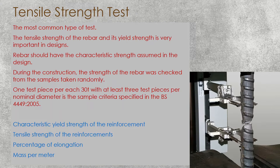During construction, the strength of the rebar is checked from samples taken randomly — one test piece per 300–330 tonnes, with at least three test pieces per nominal diameter. Each sample criteria is specified in BS 4449:2005, though tonnage may vary based on the relevant standard. Characteristic yield strength, tensile strength, percentage of elongation, and mass per meter are all evaluated from these tests.